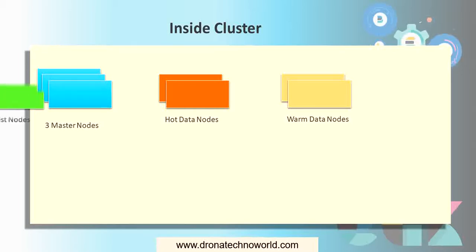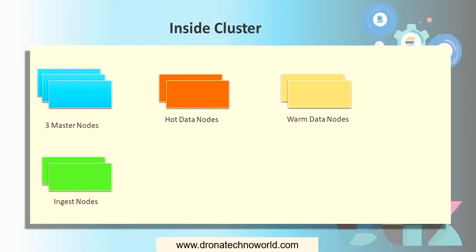The next type of nodes present inside the cluster are the ingest nodes. As the name suggests, these are the nodes which are helpful for injecting data to the Elasticsearch components. Mostly these nodes are used for transforming and enriching the data before indexing, for search and analysis purposes.